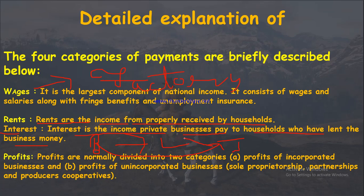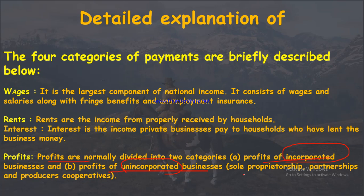Profits are divided into two categories: profits of incorporated (registered) business and profits of unincorporated (unregistered) business. Examples of unincorporated businesses include sole proprietorships — such as a single-person grocery store — and partnerships. Under the Partnership Act 1932, registration is not mandatory. These businesses also include producers' cooperatives.